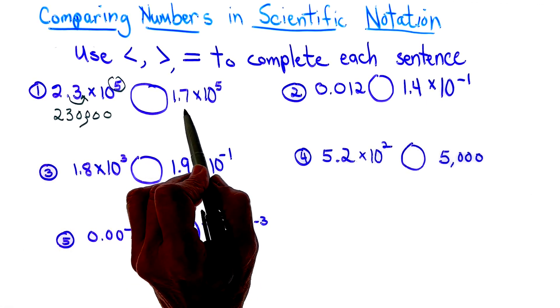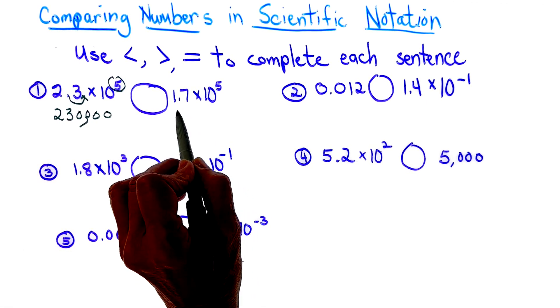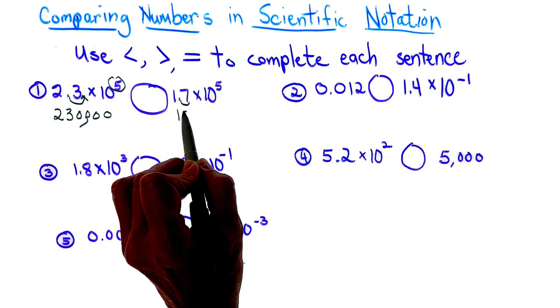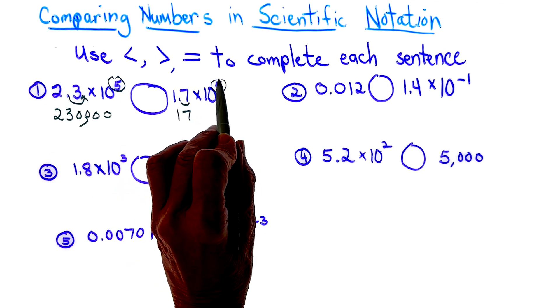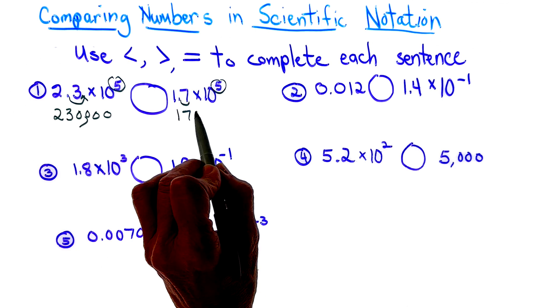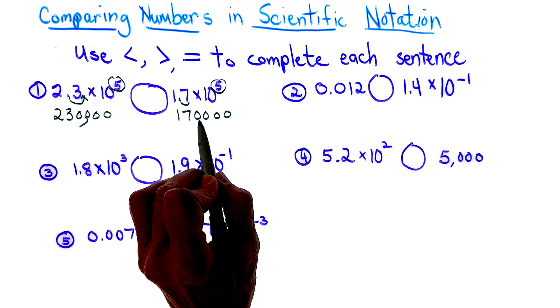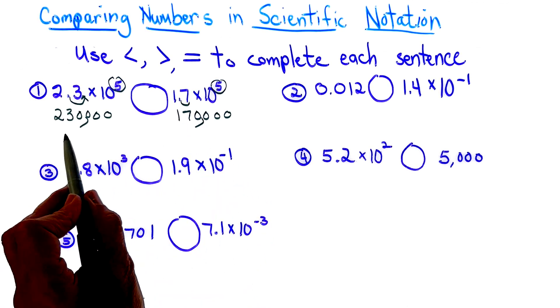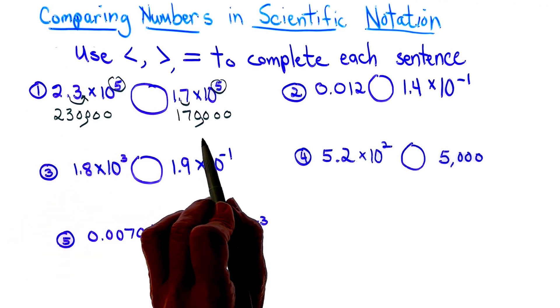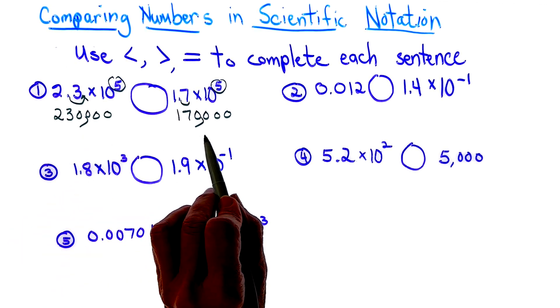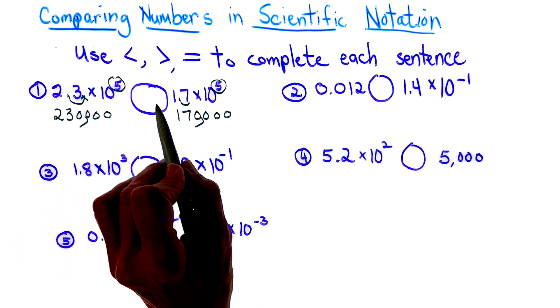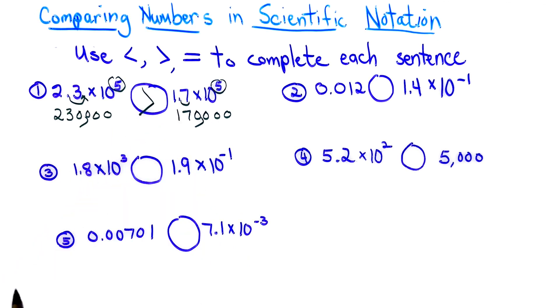Looking at the second one, I am going to again move over one. And now I have a five. So I'm going to add four zeros. One, two, three, four. And I am comparing 230,000 and 170,000. Well, we know that 230,000 is greater than 170,000.